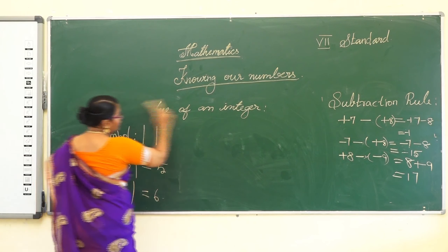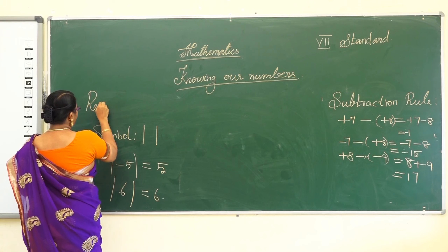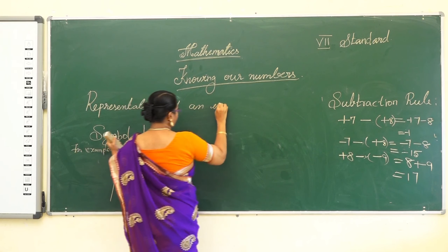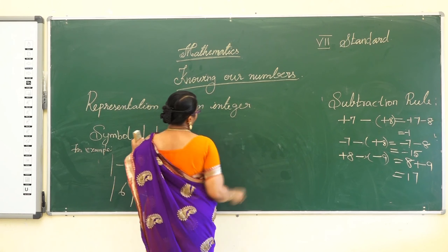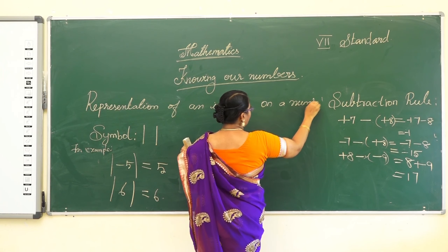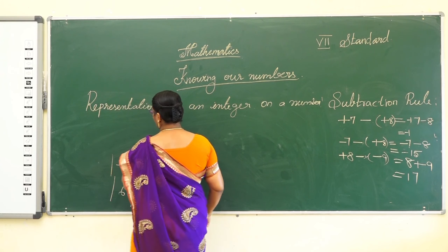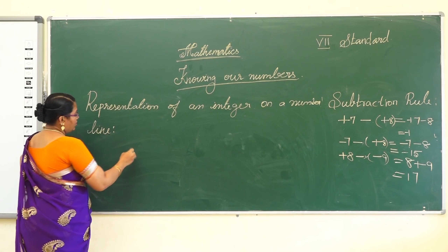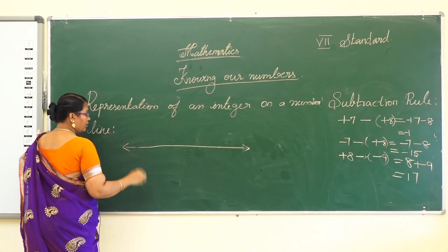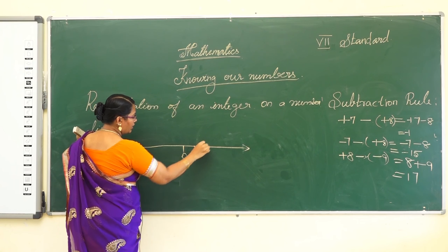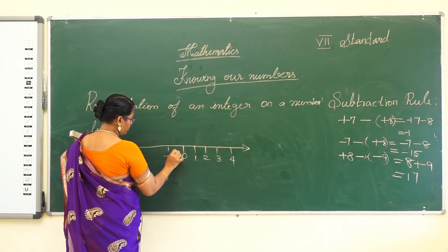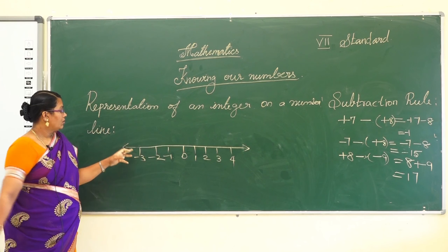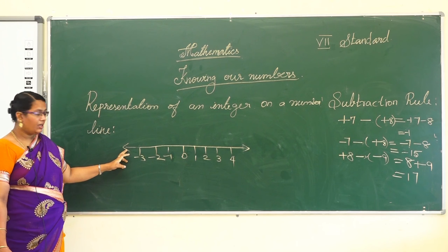Next concept: representation of integers on a number line. We draw the number line with 0 in the centre, positive numbers 1, 2, 3, 4 to the right, and negative numbers -1, -2, -3 to the left. How do you plot an integer on a number line?